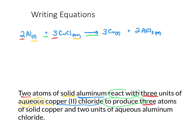'To produce' is the arrow. 'Three atoms' — the coefficient corresponds there. 'Solid' is our solid subscript. 'Solid copper' is left in its elemental form. 'And' is representative of the plus sign between the two products. 'Two units' — coefficient of two — of aqueous aluminum chloride, which we keep as the substance. Notice the corresponding color coding — these are the things you'll be pulling out of word problems to get to the written equation.